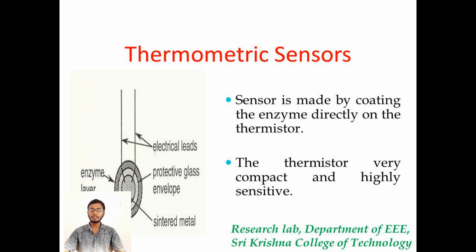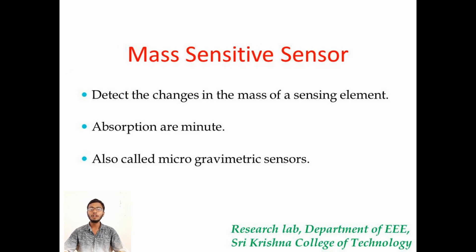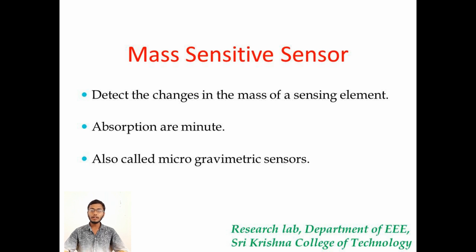The mass sensitive sensor is used to detect changes due to the absorption of certain chemical compounds. Mass is involved in absorption or binding. The mass sensitive sensors are also called gravimetric sensors. In a particular sensor, it is not possible to measure the changes in certain masses, and therefore an indirect method must be used.